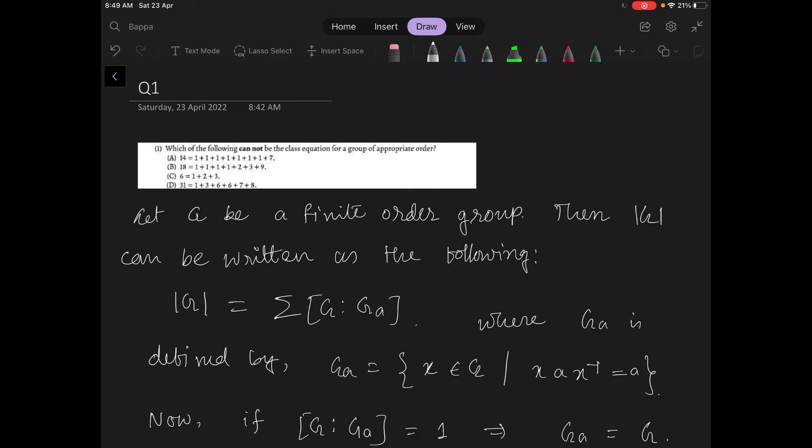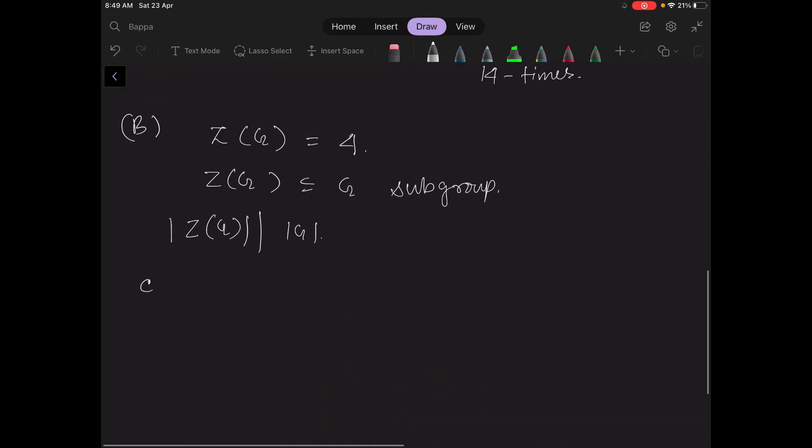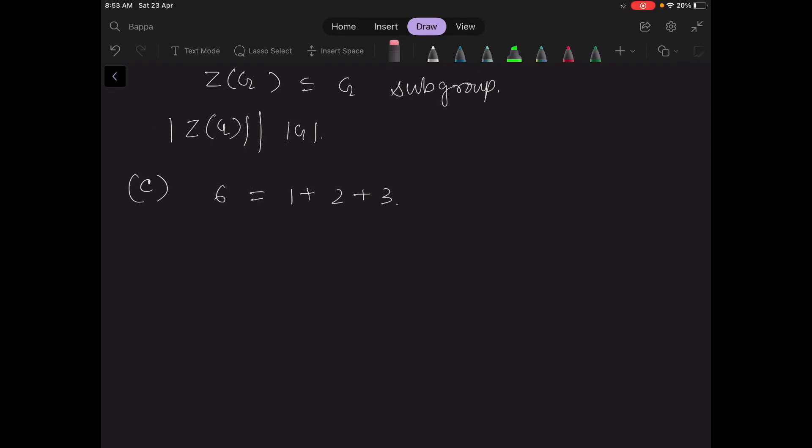Now option C, which says 6 equal to 1 plus 2 plus 3. Look at S3, then look at G(e).